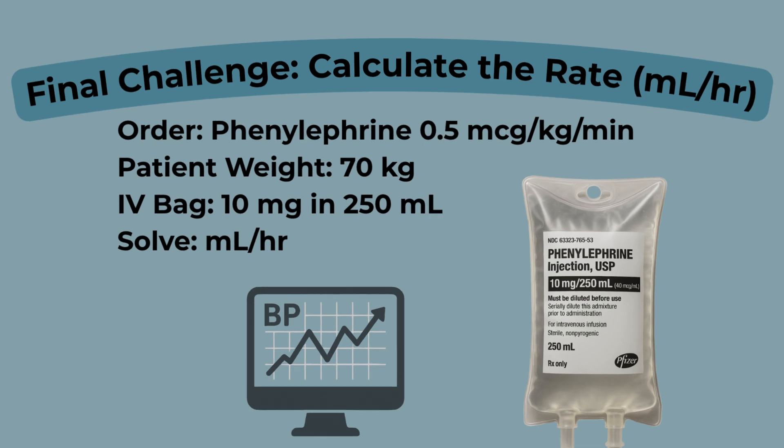Here's your final challenge. The provider orders phenylephrine at 0.5 micrograms per kilogram per minute. Your patient weighs 70 kilograms and the IV bag says 10 milligrams in 250 milliliters. Calculate the rate in milliliters per hour. Remember, convert micrograms to milligrams and set up your full dimensional analysis chain. Pause here and work through it — we'll break it down next.